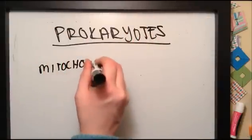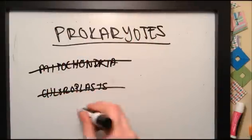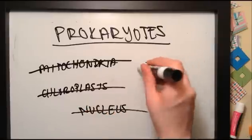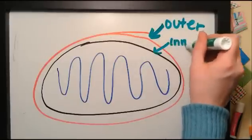Remember how prokaryotes don't have any membranous or membrane-bound organelles like mitochondria, chloroplasts, nuclei, the ER or the Golgi? Well, the mitochondrion has not one but two membranes.